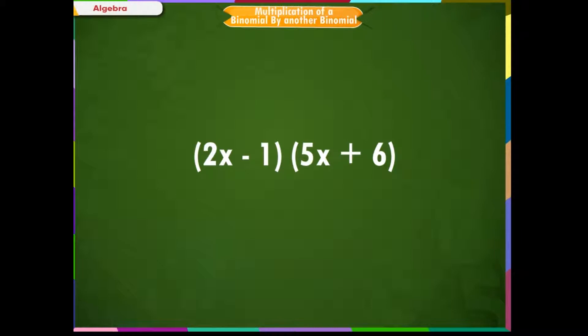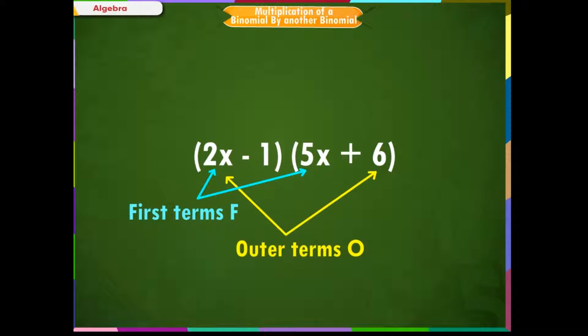For example, if these are two binomials to be multiplied, these terms are called the first terms. These terms are called the outer terms. These terms are called the inner terms. And these terms are called the last terms.